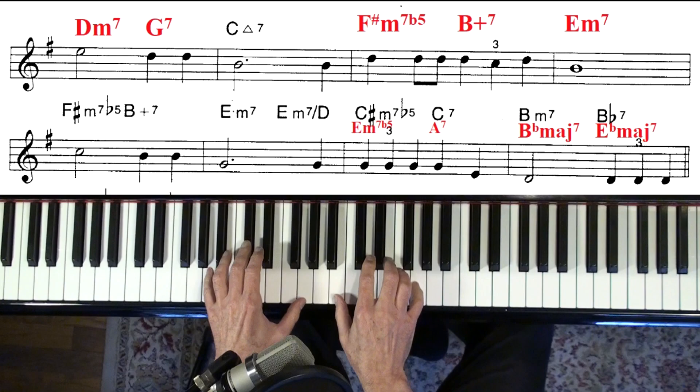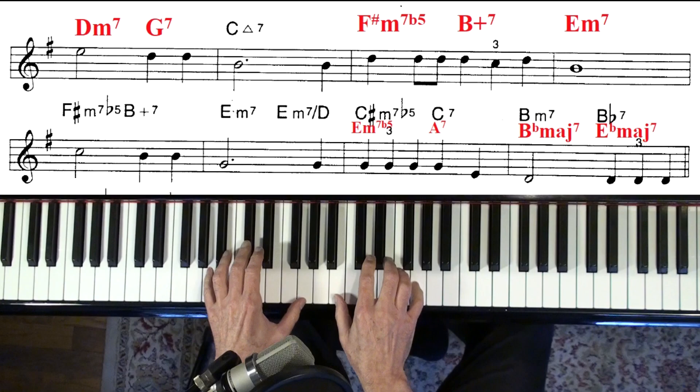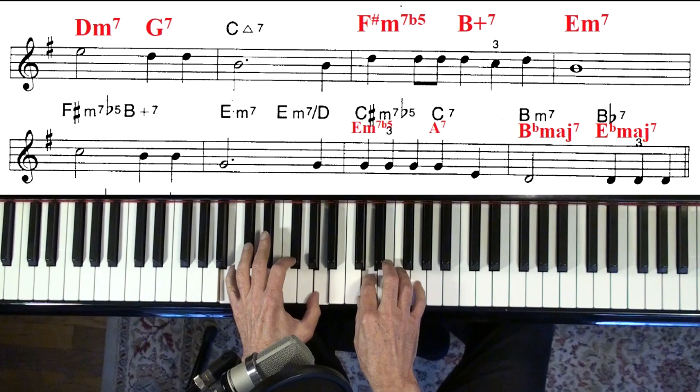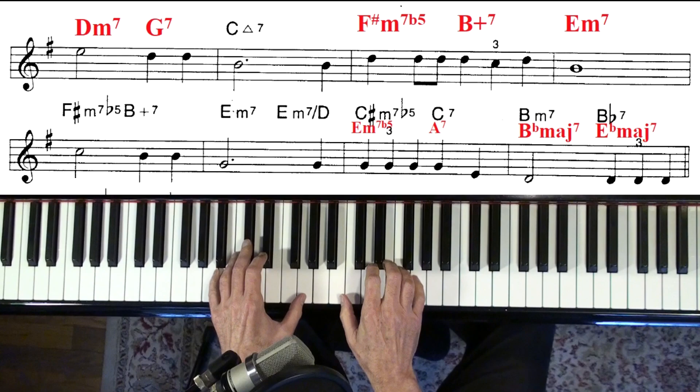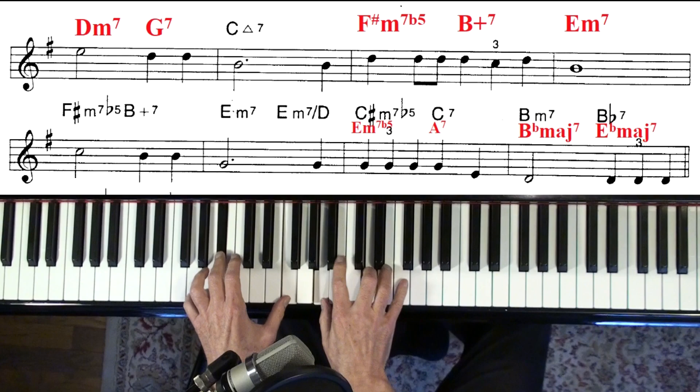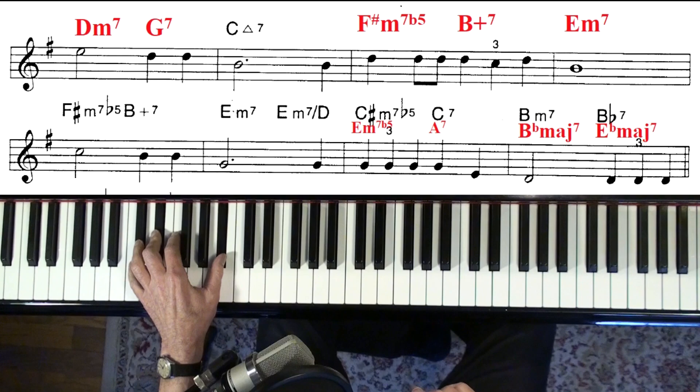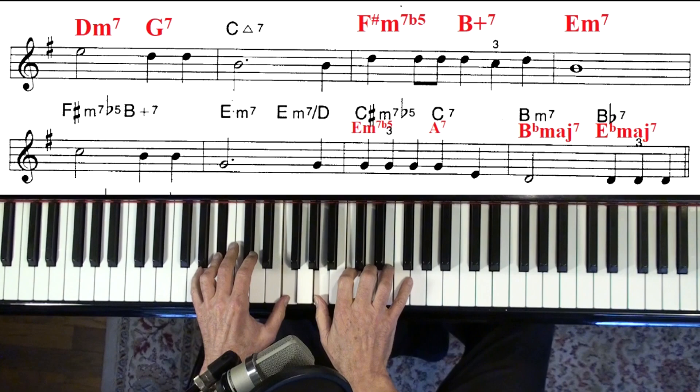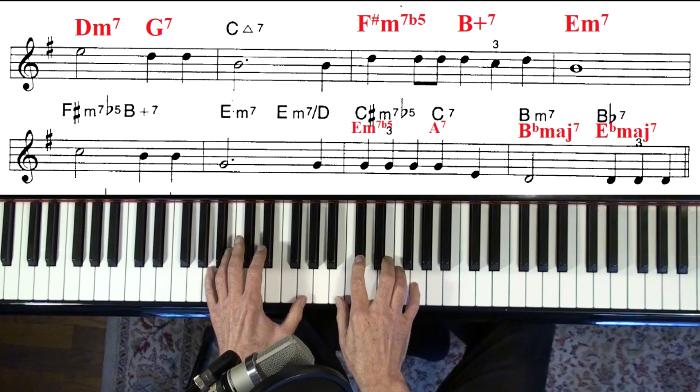A couple things you could do here. Or E minor 7 flat 5, A7. Now I think that's Diana Krall again. And another possibility is B flat major 7th and E flat major 7th. That came from this other chart though. I think I did hear one person, one of the arrangements had something similar to that. I think coming out of the E minor 7 flat 5 to A7 is the smoothest way to get to that B flat.